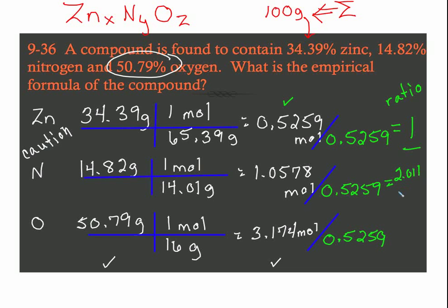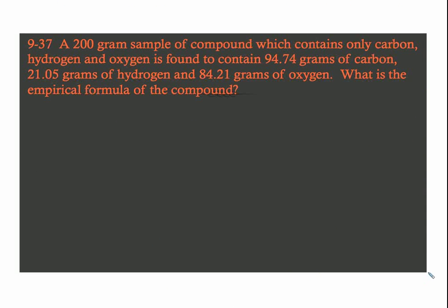What that is going to do is give us a ratio. So this is now a ratio of moles. And the smallest value will be 1. So I get a 2.011, which we're going to call approximately 2. It's certainly within a tenth. That's fine. And I get 6.04. That's within a tenth. We're going to call that 6. So if this is within a tenth, so if it's 0.1 or 0.9, it's okay to round. Since all of these are whole numbers, I now know my formula. I have ZnN2O6, which some of you may recognize as zinc nitrate.